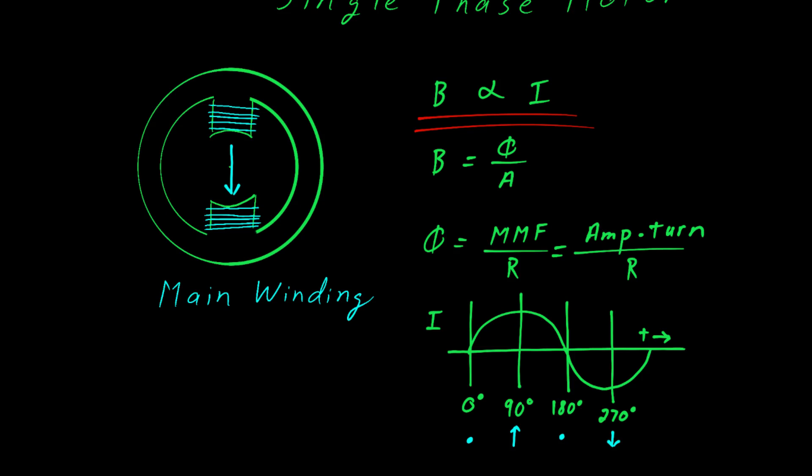This vector is certainly not rotating. All it's doing is growing up and then growing down. It's growing to the north, shrinking and then growing to the south and then shrinking back. What we need is a second set of windings that will allow us to point east and west and so we add the start winding.